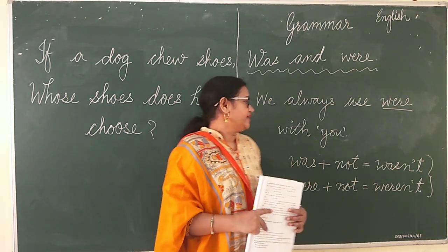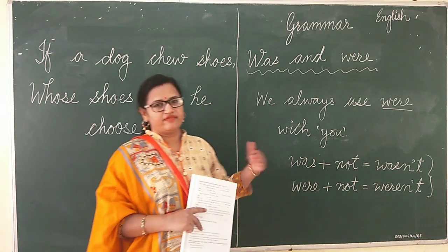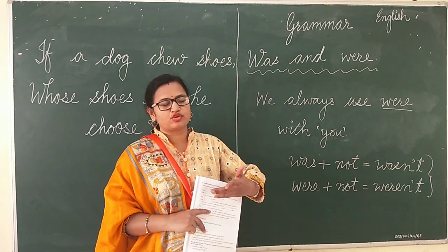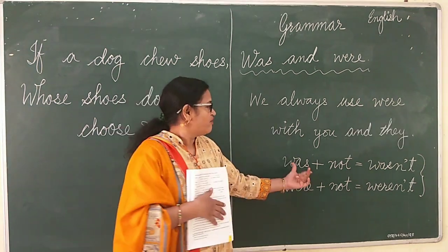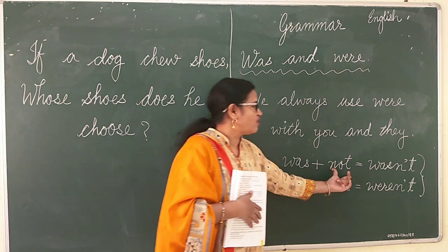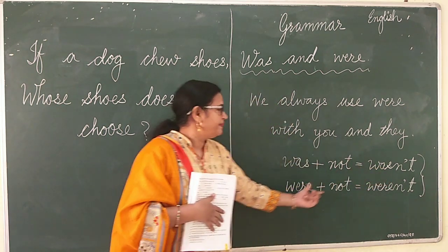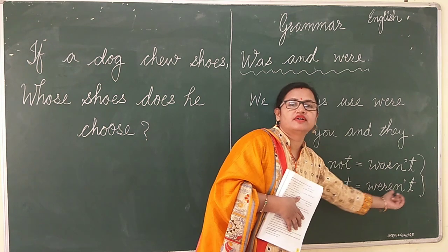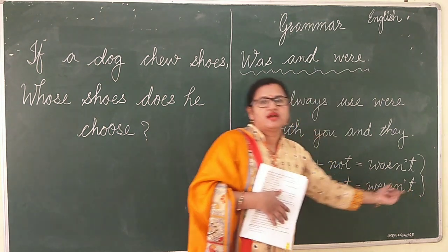And there are some short forms, while speaking and while writing, to make it easy. 'Was not' becomes 'wasn't'. And 'were not' becomes 'weren't'. So 'was' + 'not' = 'wasn't', and 'were' + 'not' = 'weren't'.